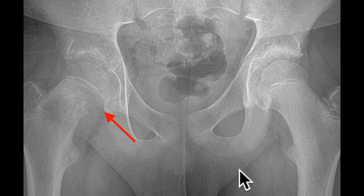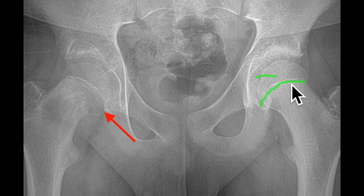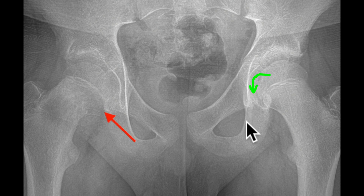In patients presenting with hip pain for which slipped capital femoral epiphysis is suspected, a pelvic radiograph can also be obtained. SCFE, or slipped capital femoral epiphysis, would demonstrate widening of the physis or irregularity at its pre-slip phase. On the acute slip phase, the epiphysis is displaced posteromedially. This is not seen in this case.